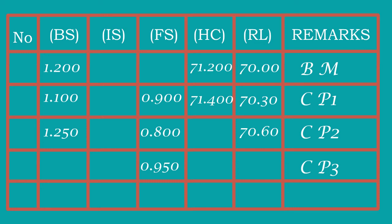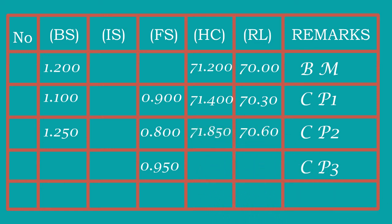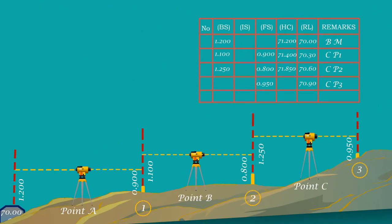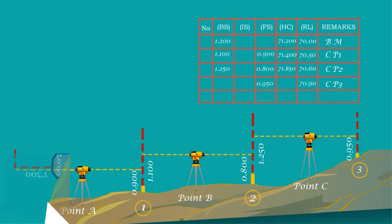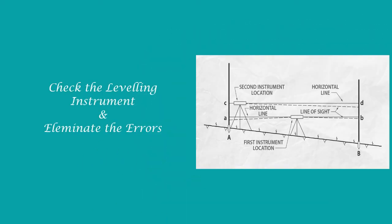Repeat for CP3. The HC of station C is RL of CP2, 70.6 meters, and add BS of 1.25 meters equals 71.85 meters, and deduct the FS 0.95, gives the value 70.9 meters, which is RL of CP3. Now we understand how to shift the instrument and fix the change point and convert that as temporary benchmarks. Now let us see how to check the errors and eliminate that in the leveling instrument.